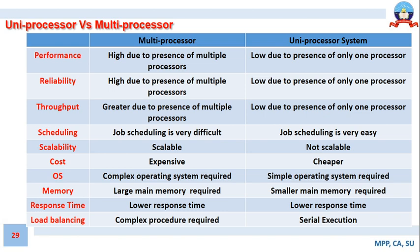These are the prominent parameters for qualitatively distinguishing uniprocessor and multiprocessor systems. The parameters covered are: performance, reliability, throughput, scheduling, scalability, cost, operating system, memory, response time, and load balancing. Also noting a typo correction: in a uniprocessor system, response time is very large; in a multiprocessor system, response time is very low.